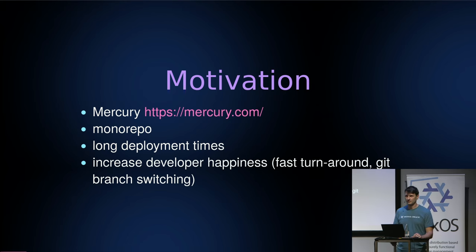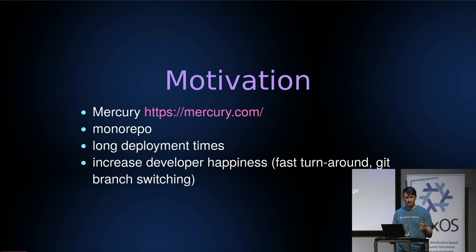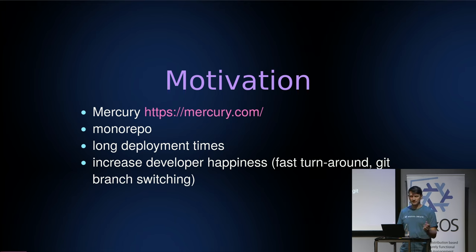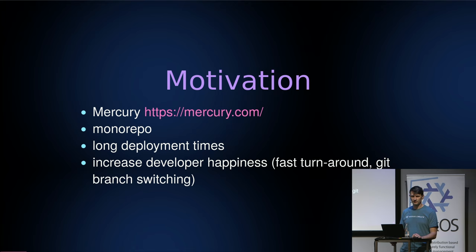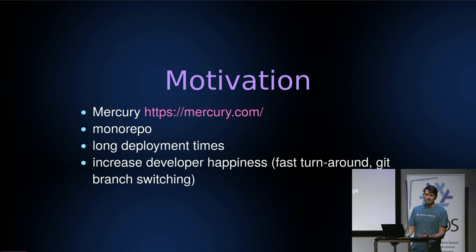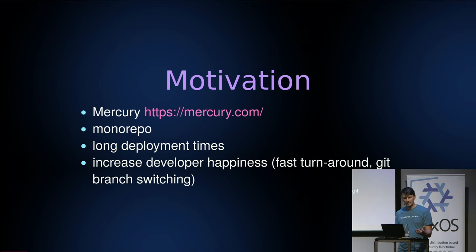First, a bit of background for the motivation. We are working on a client project for Mercury, which is a company in the US that provides banking services. They have a big monorepo with quite a large share of Haskell code, and they're currently hitting the limits of the native build tool when deploying. It takes a long time, developers have to wait for CI to complete, and they get a little unhappy, so we want to bring back the happiness.